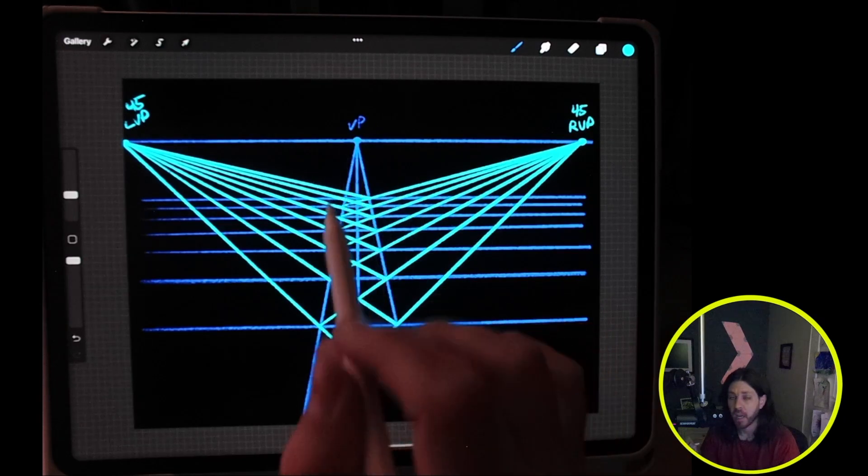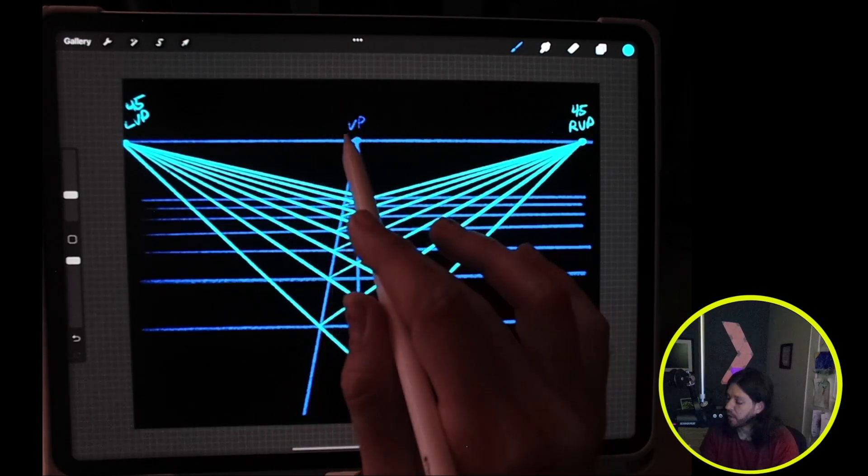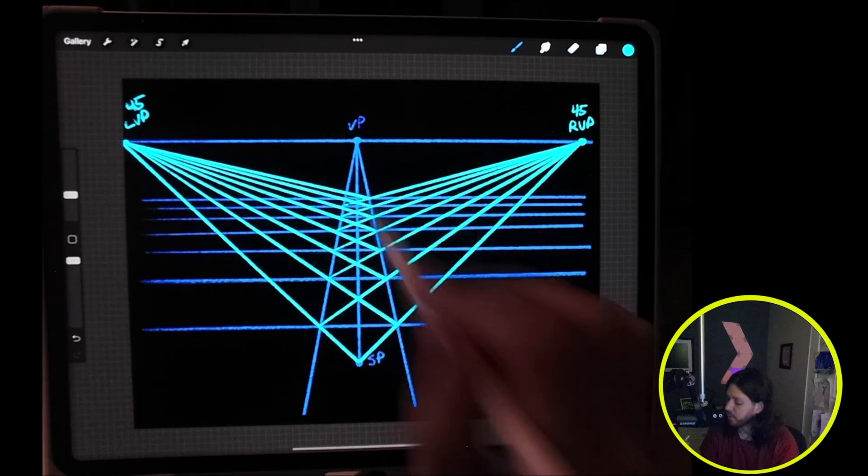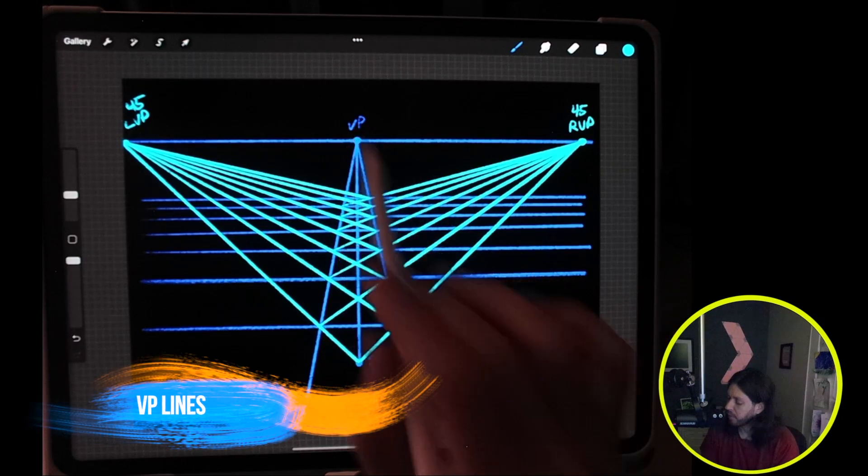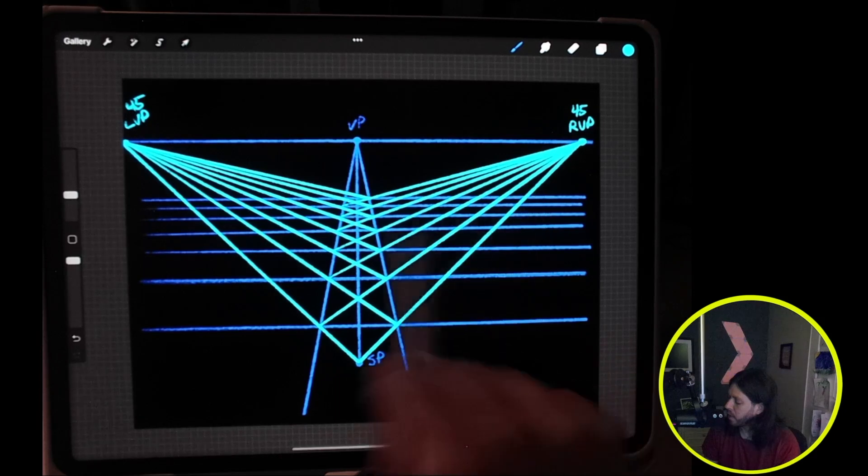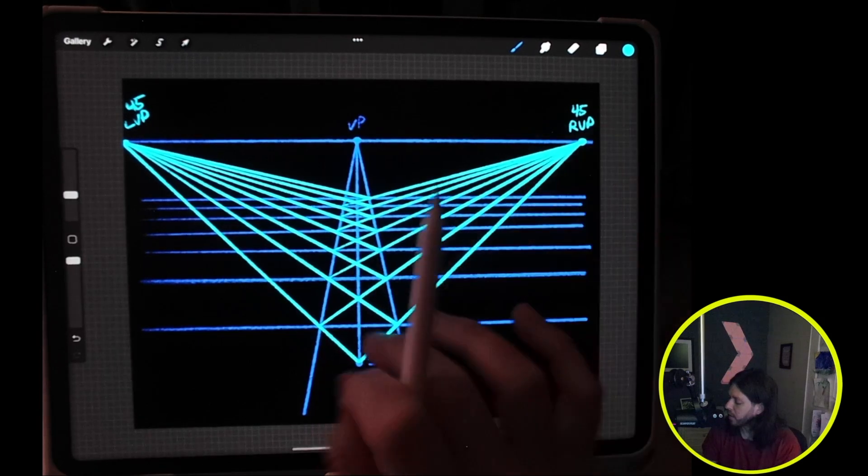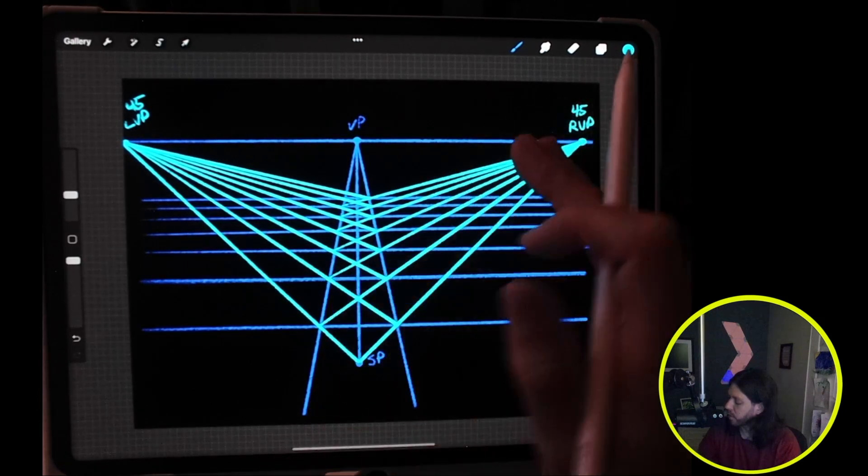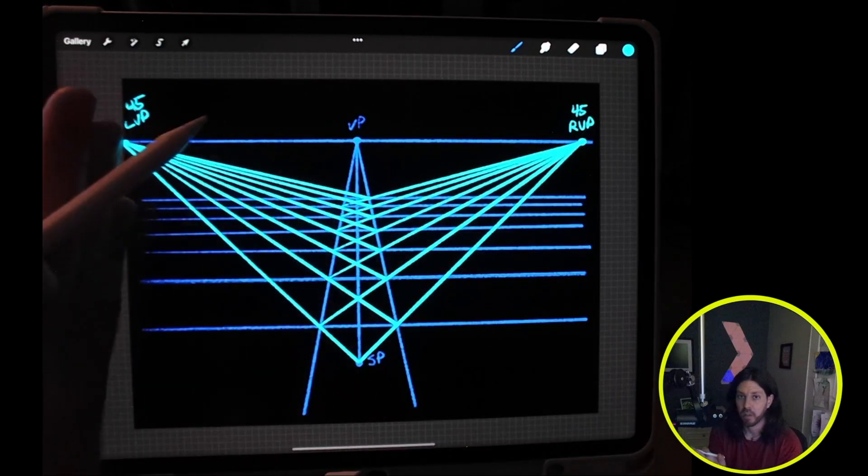Now that I have all of those guidelines, we can go ahead and finish the rest of these vanishing points by connecting from the vanishing point to the intersection here, and then I'll just keep going up the vanishing point over to the right and then I'll do the ones over to the left.